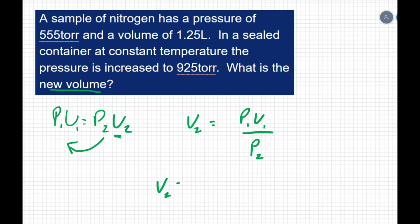Then I can just plug in my numbers. V2 equals P1, which is 555 torr, and then V1 is 1.25 liters. P2 is 925 torr.